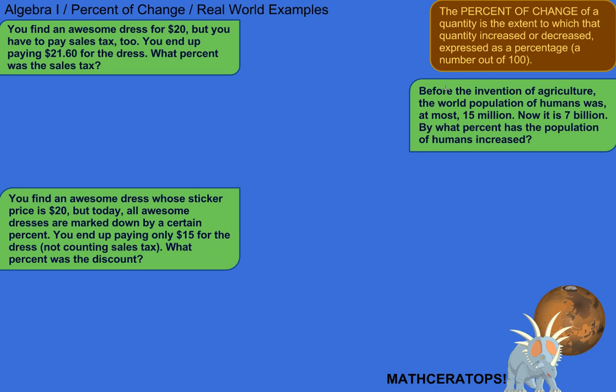So let's try a few more concrete examples where you would actually use your knowledge of percent of change to solve stuff in real life. For example, you find an awesome dress for $20, but you have to pay sales tax too — welcome to the real world. You end up paying $21.60 for the dress. What percent was the sales tax? So we'll kind of reverse-engineer the sales tax.